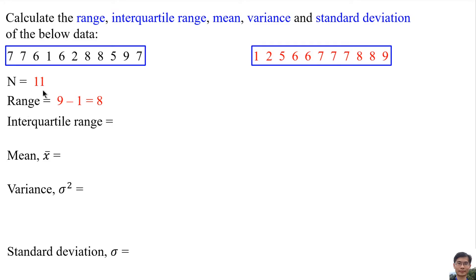There are 11 data. To find the middle of the data: 11 plus 1, and then divided by 2. 11 plus 1 is 12, 12 divided by 2 is 6, so the middle of the data is the sixth data. So the median is 7.